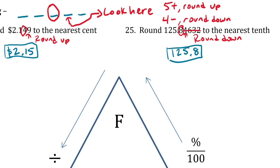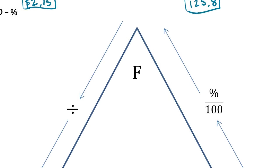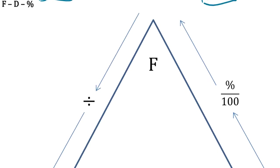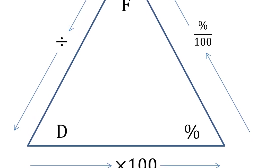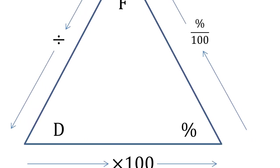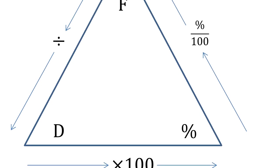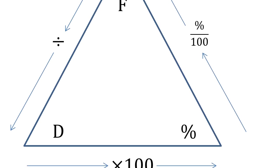We'll just have those two rounding examples for now, as we'll get more practice later in the lesson. The next topic is converting between fractions, decimals, and percentages. The basic idea is that to convert between any one of these, you're either dividing, multiplying by 100, or dividing by 100.